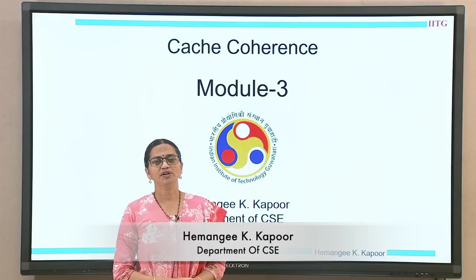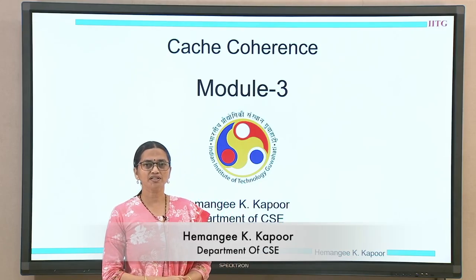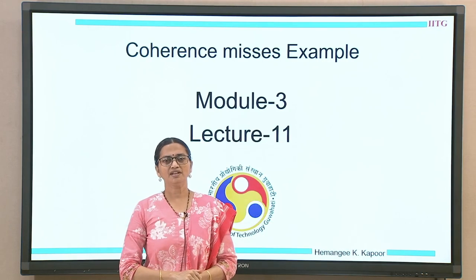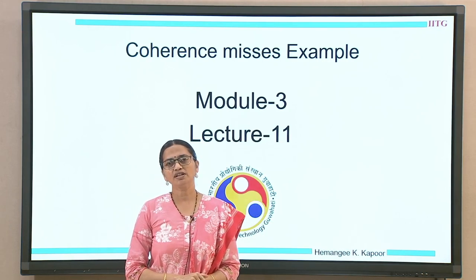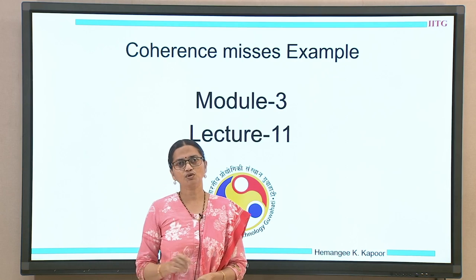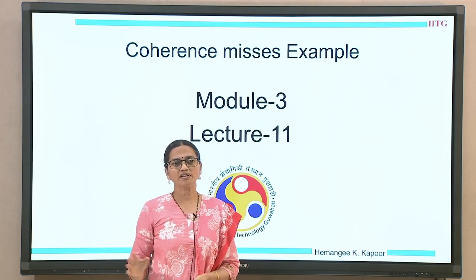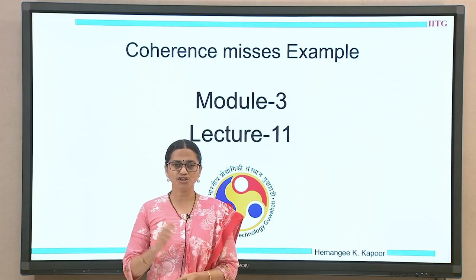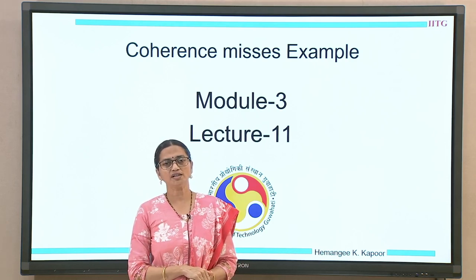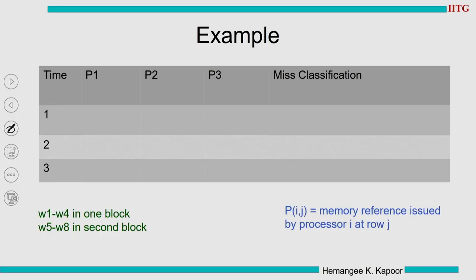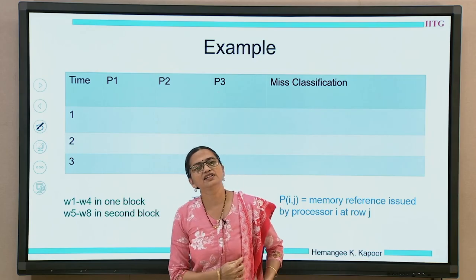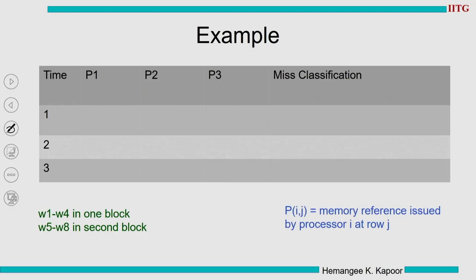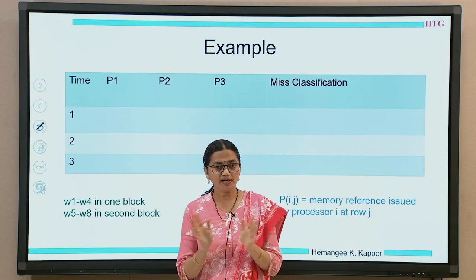Hello everyone. We are doing module three on cache coherence. This is lecture number 11 and in this lecture we are going to see a detailed example of cache coherence misses along with some classifications related to update versus invalidation based protocols. We will start with the example of cache coherence. We have seen the different categories of misses and now we will do an example to understand the process properly.